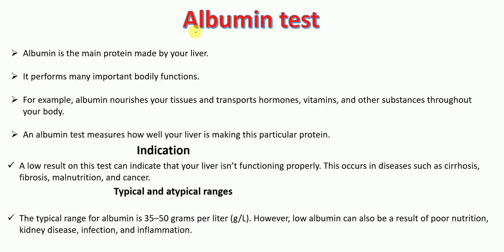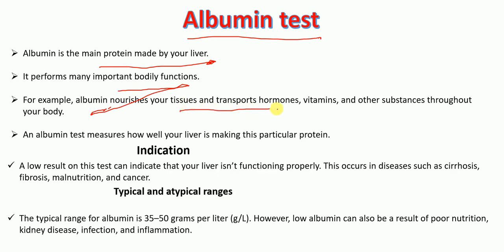Another test under liver function testing is called the albumin test. Albumin is the main type of protein produced by the liver and performs many important functions — for example, it nourishes our tissues and transports hormones, vitamins, and other substances throughout the body. An albumin test measures how well the liver is making this particular protein. A low result on this test indicates a problem with the liver, occurring in diseases such as liver fibrosis, liver cirrhosis, malnutrition, or cancer.